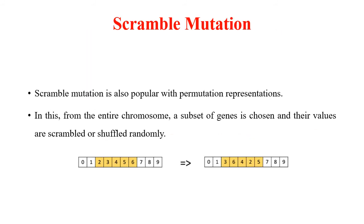In scramble mutation, a subset of genes is selected from the chromosome and their values are shuffled or scrambled randomly. Scramble mutation is popular with permutation representations. For example, a selected subset of genes is reshuffled to produce one new offspring.